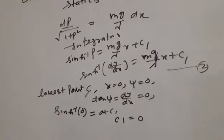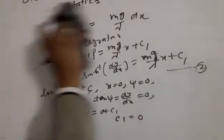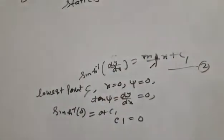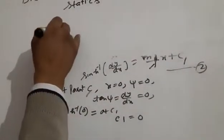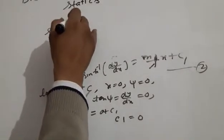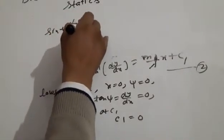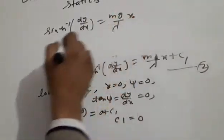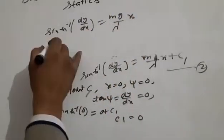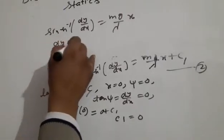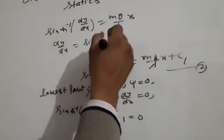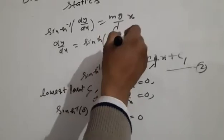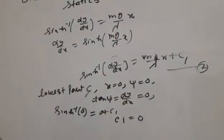After putting in equation 2, we get sine hyperbolic inverse dy upon dx equal to mg upon lambda into x. Moving this over, dy upon dx equal to sine hyperbolic mg upon lambda into x.